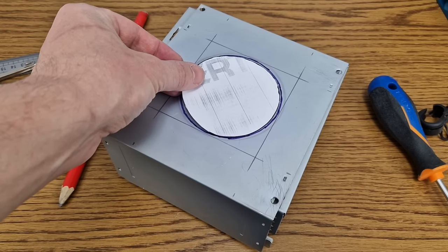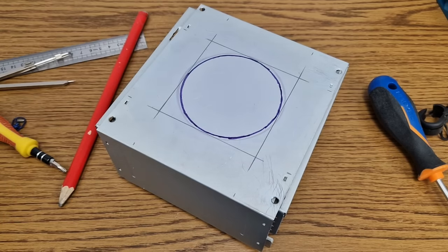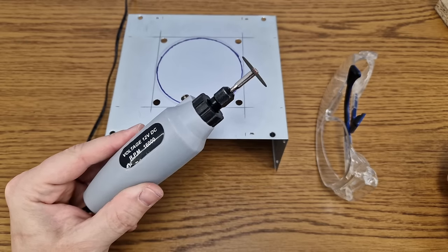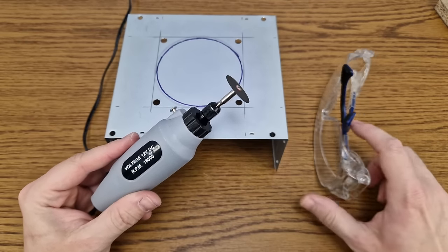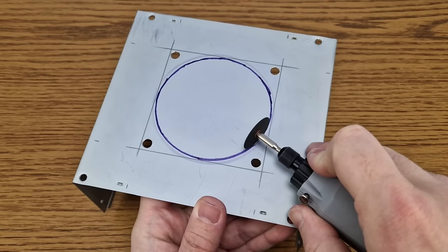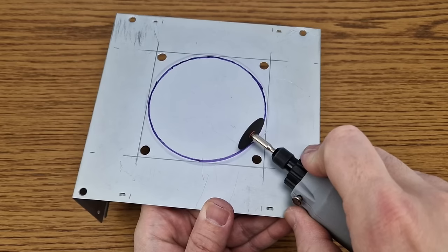I will reposition the cooling fan on the top panel, so I measured and made the paper template, and then I used it to mark the hole on the metal case. To cut the metal panels I will use my small and underpowered rotary tool. Safety goggles are mandatory. And here we go. Oh boy, this will take a while.